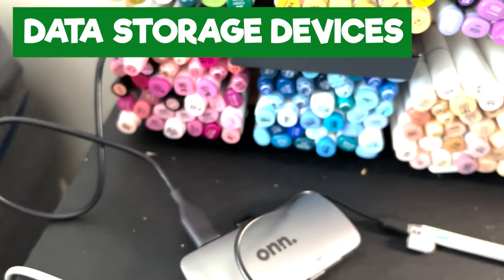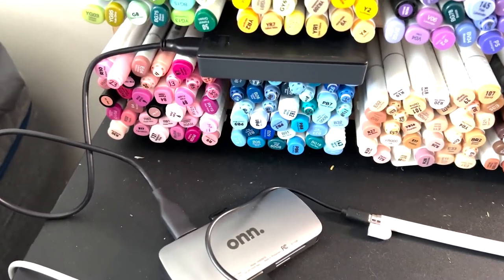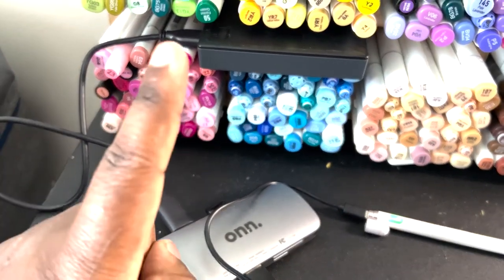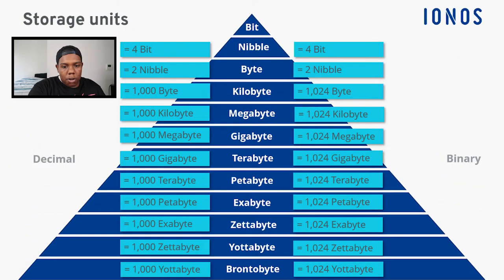Number eight: data storage devices. I learned about these on my own as a kid — first an SD card and adapter, then a flash drive in middle or high school when it became part of my supply list, and eventually external hard drives for storing video footage. When it comes to data storage, first come bits, then nibbles, then bytes, kilobytes, megabytes, gigabytes, terabytes, and so on. I'll throw a chart on screen showing how many gigabytes are in a terabyte.